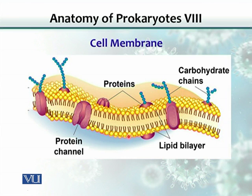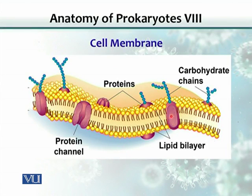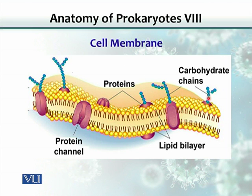These phospholipid molecules have a lipid tail and a phosphate group, which is polar — it has a charge on it — and that interacts with the water inside the cytoplasm and also outside. There are also various proteins inserted into the cell membrane or plasma membrane. Some act as channels for various nutrients. Some proteins inserted into the plasma membrane have carbohydrate side chains and can act as receptors for various molecules.